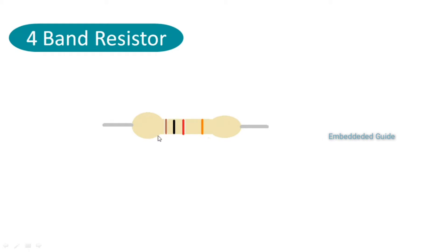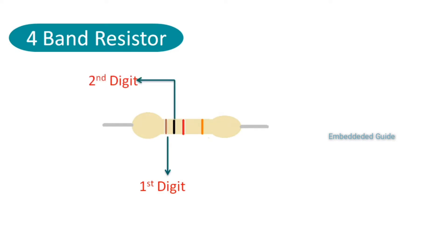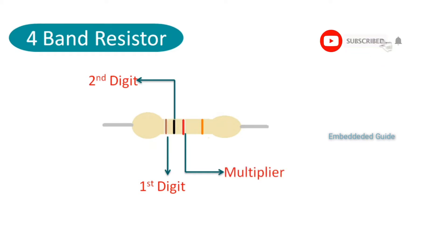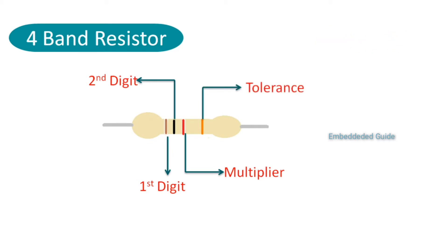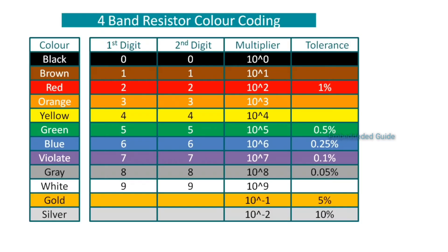The first two color bands define the resistor digit values. The third color band is the multiplying factor. The fourth color band is the tolerance value. Using these, we can define the resistor value. Now we can see the values of the color bands.